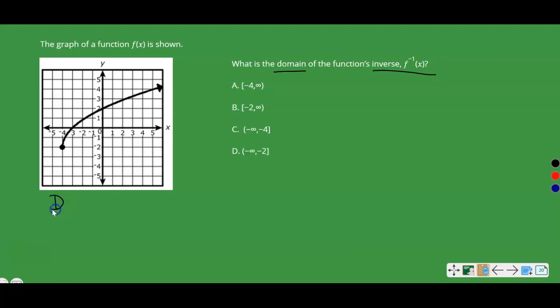If we look at the domain here, we know that the domain of f(x) is all your x values. So it's going to be from negative 4. Negative 4 is included because it's a solid circle, negative 4 to infinity.